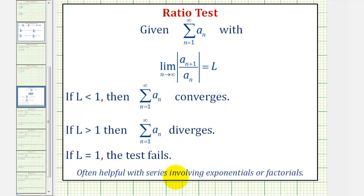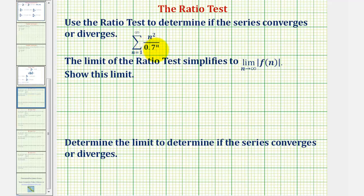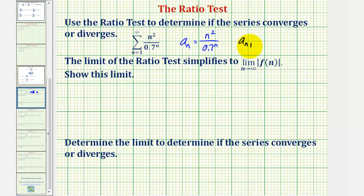Often, the ratio test is helpful when the series involves exponentials or factorials. Notice here the series has an exponential part. Notice a sub n is equal to n squared divided by 0.7 raised to the power of n, and a sub n plus one would be the quantity n plus one squared divided by 0.7 raised to the power of n plus one.